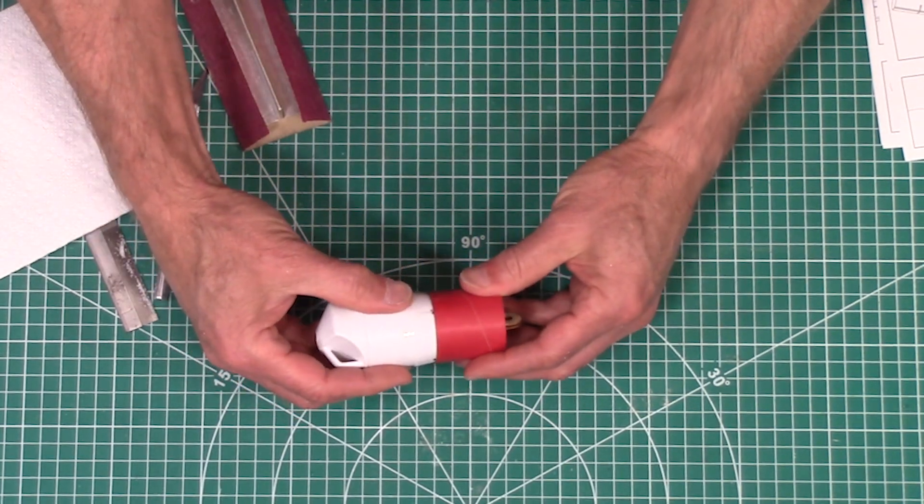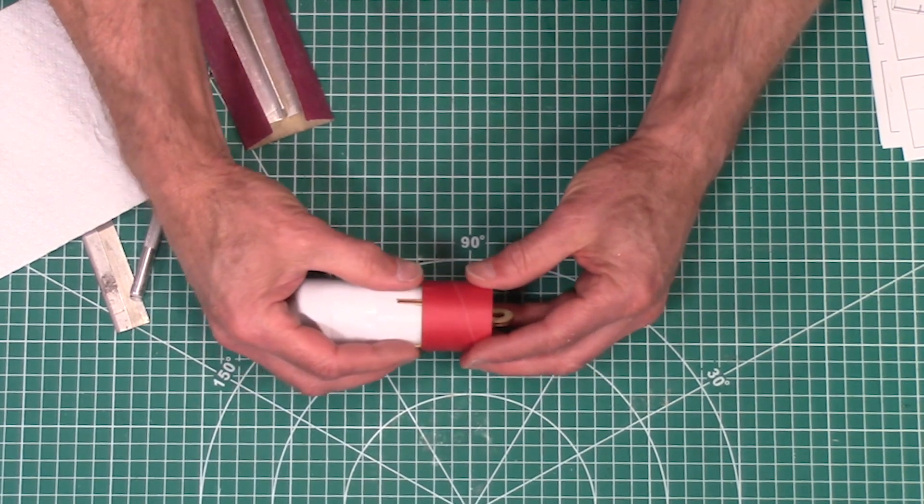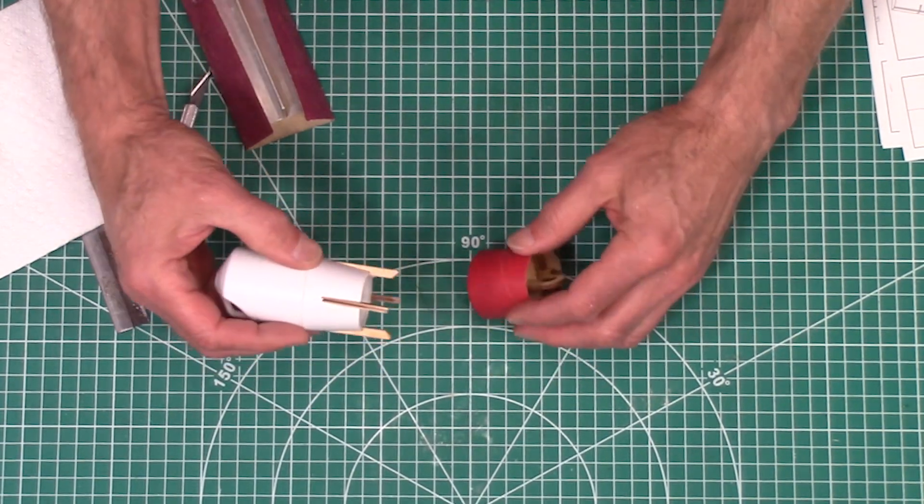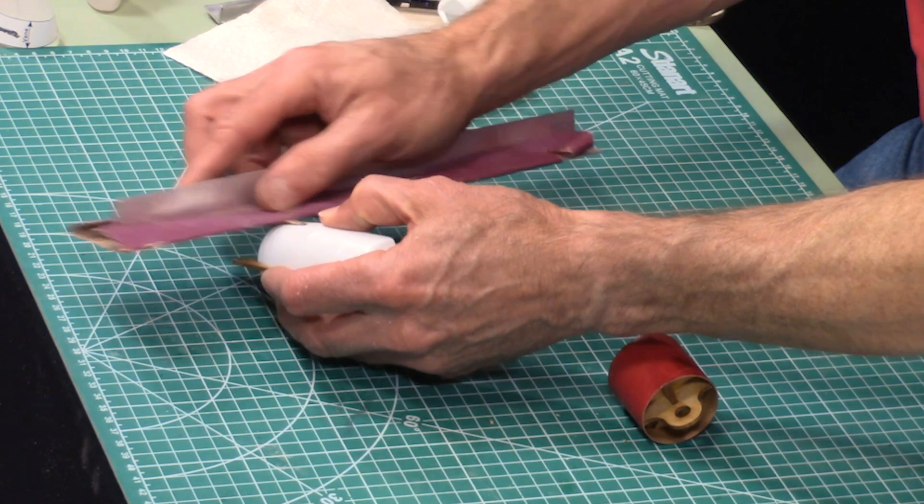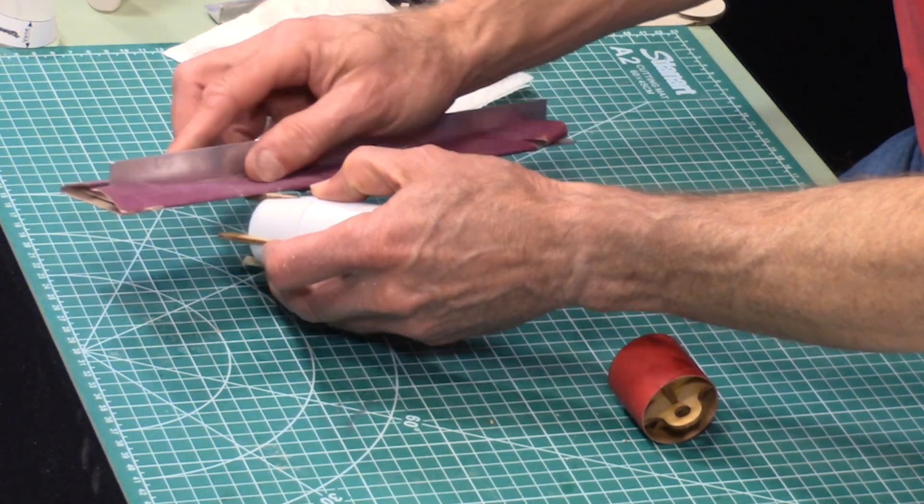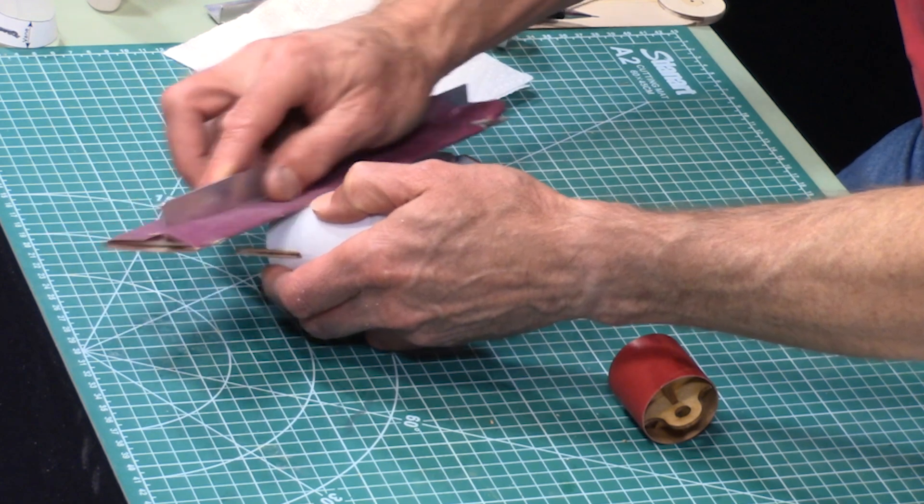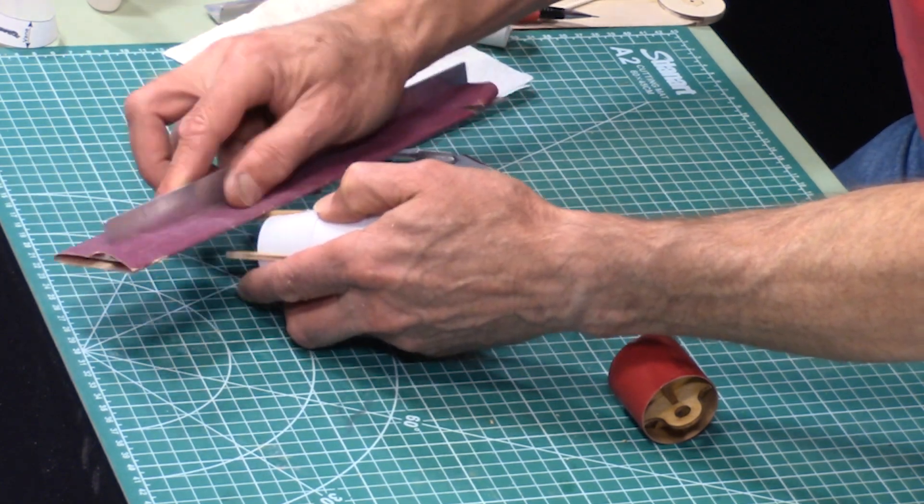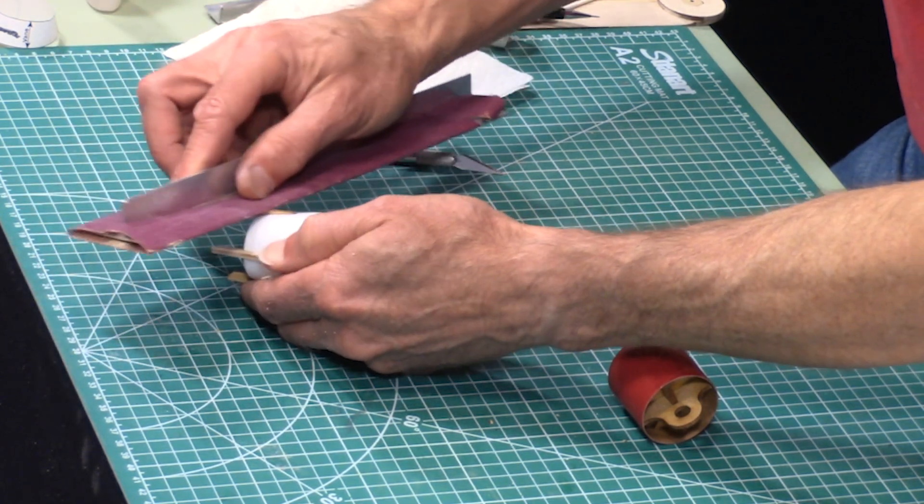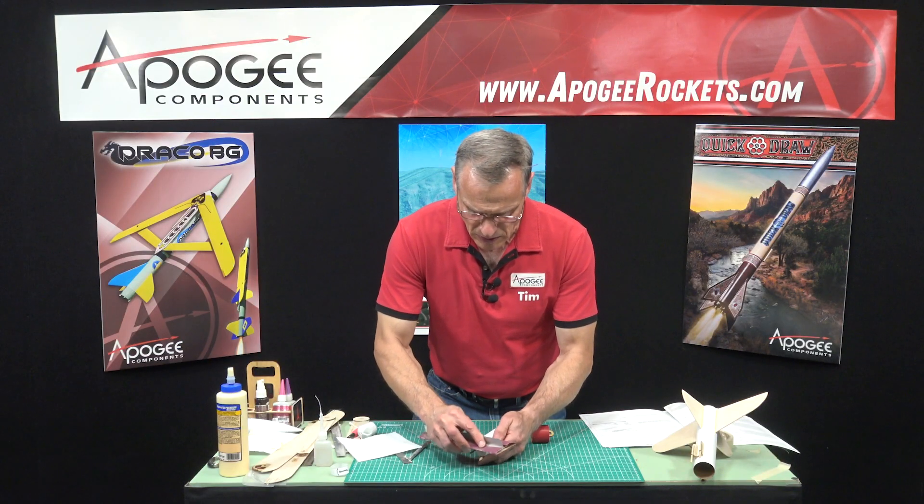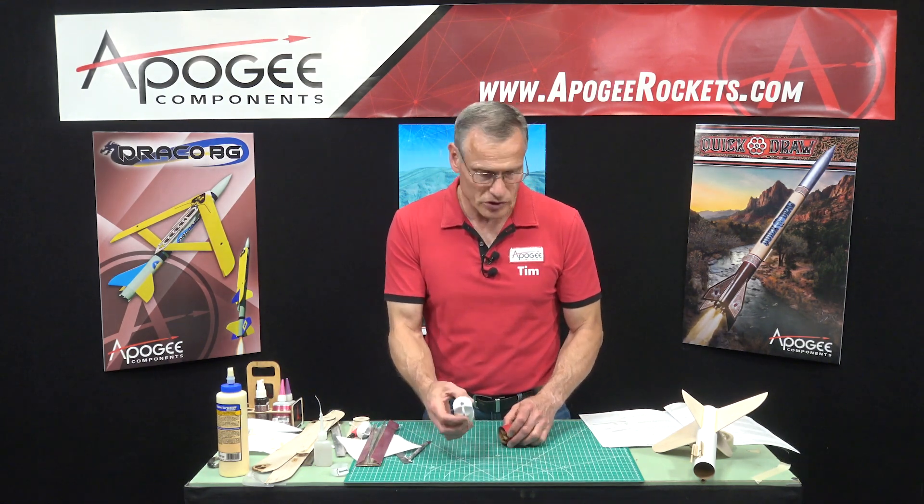Okay so now we're going to test fit one more time. Oh that's a beautiful fit. It has a little bit of friction and after you paint it it's going to have more friction. So you might come across and sand the upper surface just to knock off a little bit of friction before you paint it.